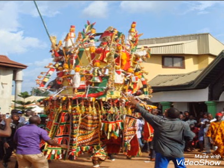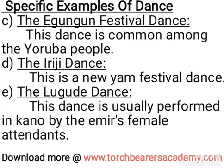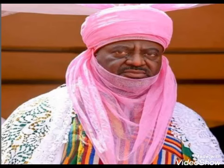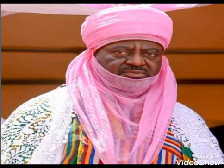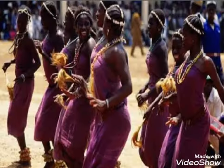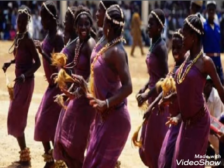The next one is the Lugude dance. This dance is performed in Kano by the Emir's female attendants. The Emir is the king in Kano for the Hausas, just as the Oba is the king of Bini. The female attendants come to perform this dance before their Emir.